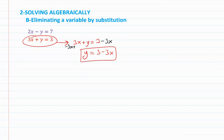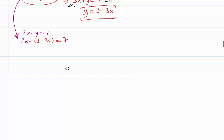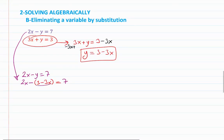I'm going to substitute this y value into the other equation 2x minus y equals 7. So 2x minus (3 minus 3x) equals 7.